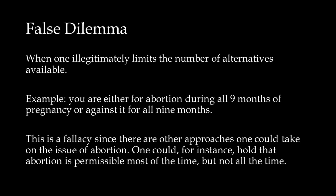The false dilemma fallacy. This is when one illegitimately limits the number of alternatives available. For example, you are either for abortion during all nine months of pregnancy or against it for all nine months. This is a fallacy since there are other approaches one could take on the issue of abortion. One could, for instance, hold that abortion is permissible most of the time, but not all of the time.